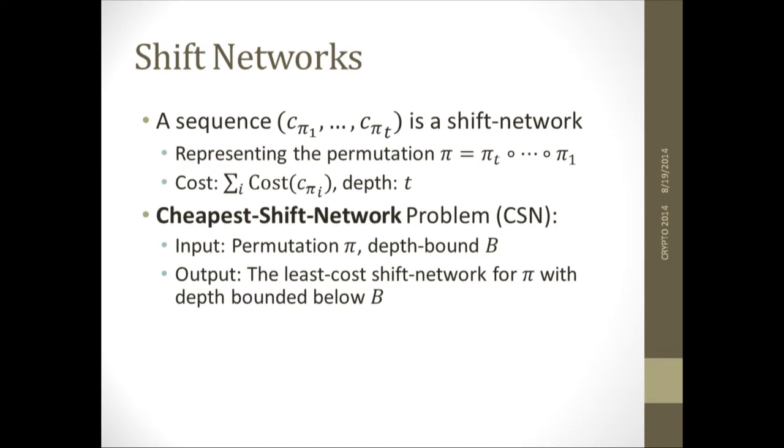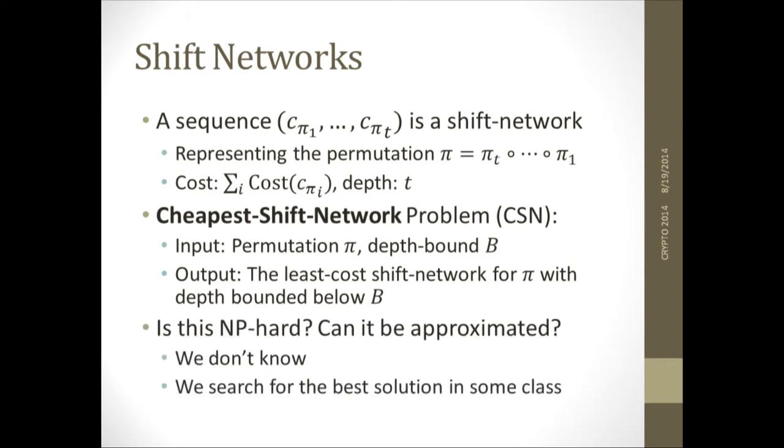That defines for us an optimization problem. What you want to find is the cheapest shift network that you can have in terms of the number of shifts that you're going to need to do that implements that permutation. It's a well-defined problem, an interesting problem. You can ask questions like, is this a hard problem? Is it an easy problem? Is it NP-hard? Can you approximate it up to a constant factor? We don't know the answers to any of them. We know that you can approximate it up to a log n factor because that's easy. What we do is we define some class of natural solutions that in particular is guaranteed to include within it a log n approximation but hopefully even better, and then we actually search for the best solution within that class. This is the thing that's actually implemented in the library.